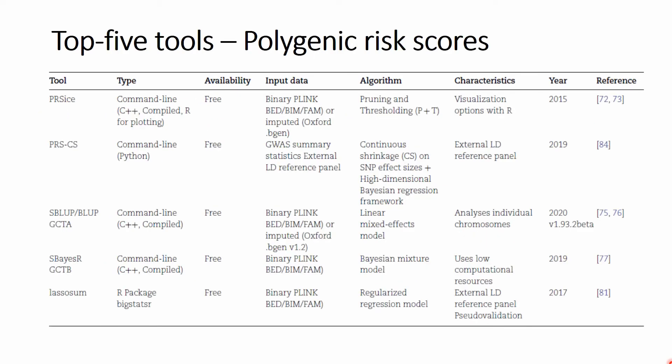We go further to the top five tools for polygenic risk scores, where the top of the list is PRSice — which has a very nice similarity to the word 'precise'. It is followed by PRSCS, then SBLUP from GCTA, SBSR from GCTB, and the R package LASSOSUM. Many of these tools take PLINK as the input data, which is always great to see.